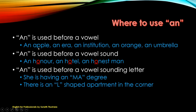Then we use 'an.' 'An' is used before a vowel: an apple, an era, an institution, an orange, an umbrella — the vowels being A, E, I, O, U. 'An' is also used before a vowel sound. For example, 'an owner' — here H is silent. What about 'a hotel' versus 'an hotel'? If you pronounce it 'hotel,' use 'a hotel.' But in some places people make the H silent and say 'otel' — in that case say 'an hotel.' If you say 'hotel,' use 'a hotel'; if you say 'otel,' use 'an hotel.'